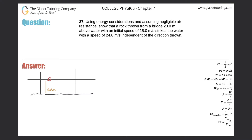Number 27: using energy considerations and assuming negligible air resistance, show that a rock thrown from a bridge 20 meters above the water with an initial speed of 15 meters per second strikes the water with a speed of 24.8 meters per second, independent of the direction thrown.